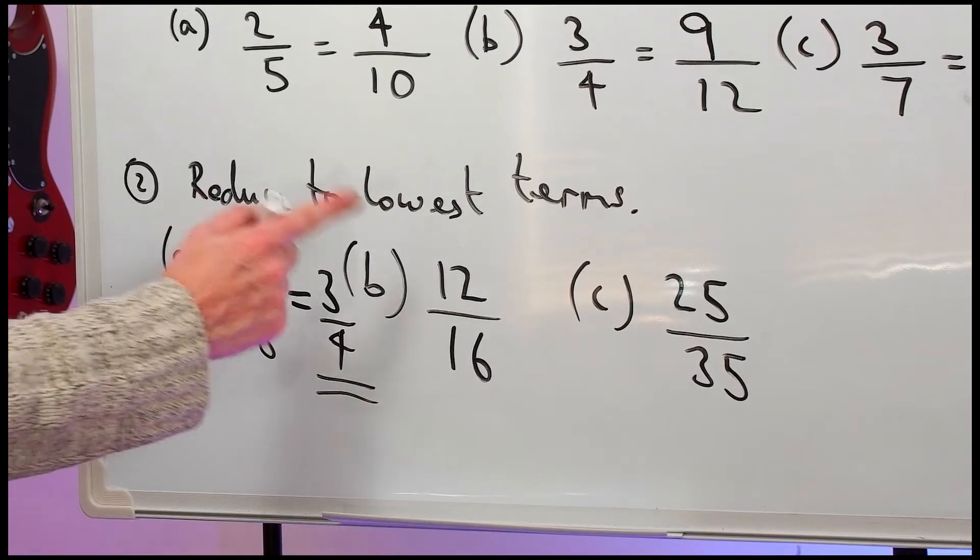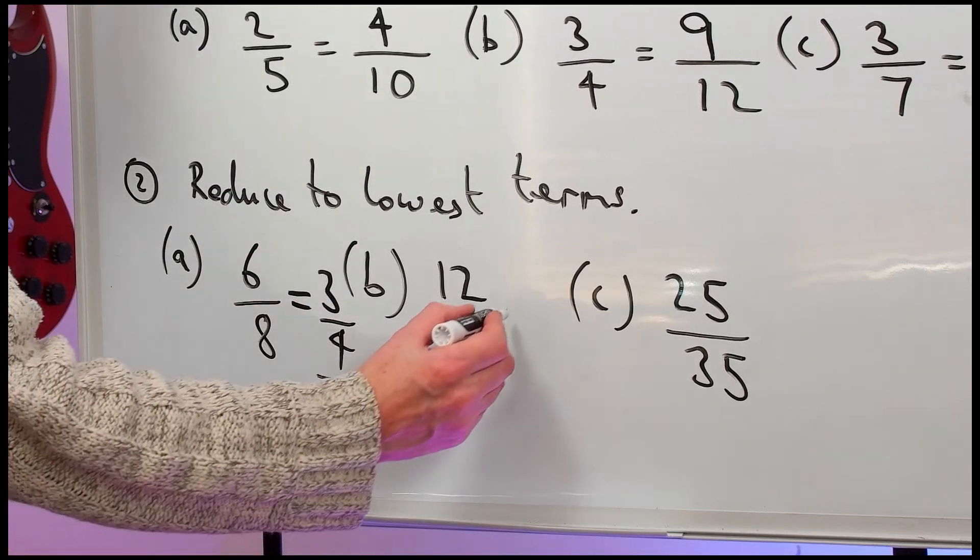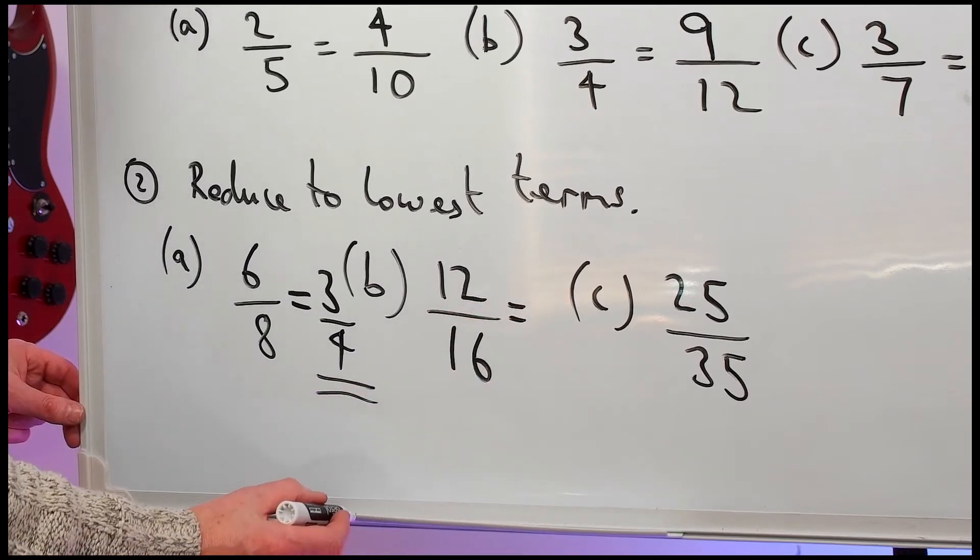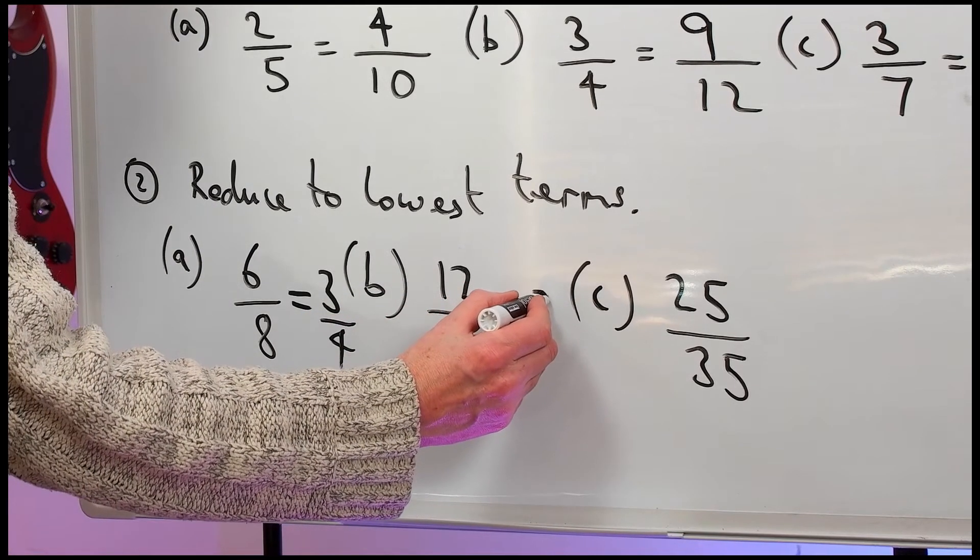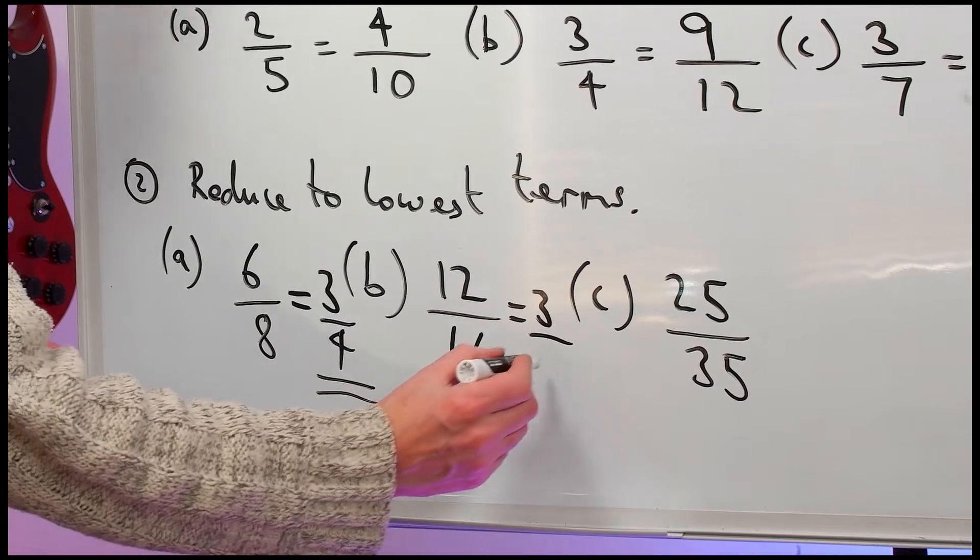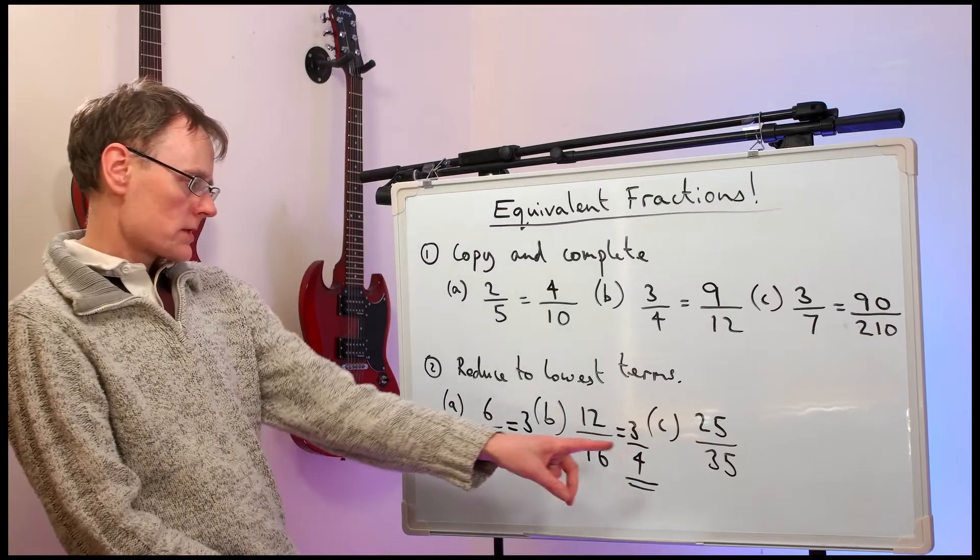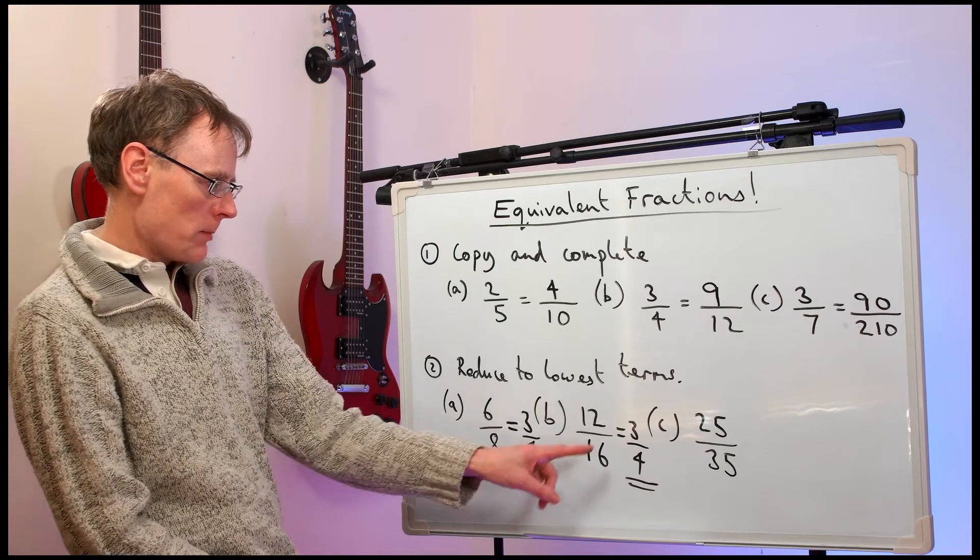Part B. Four goes into twelve and sixteen. We can divide them both by four. Four into twelve go three times. Four into sixteen go four times. Look. Same answer. They're all the same number.